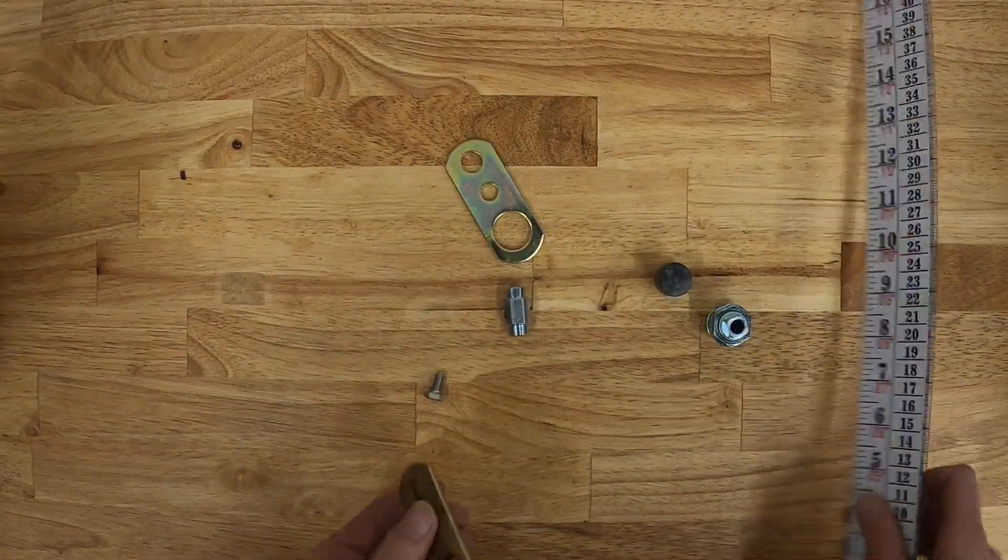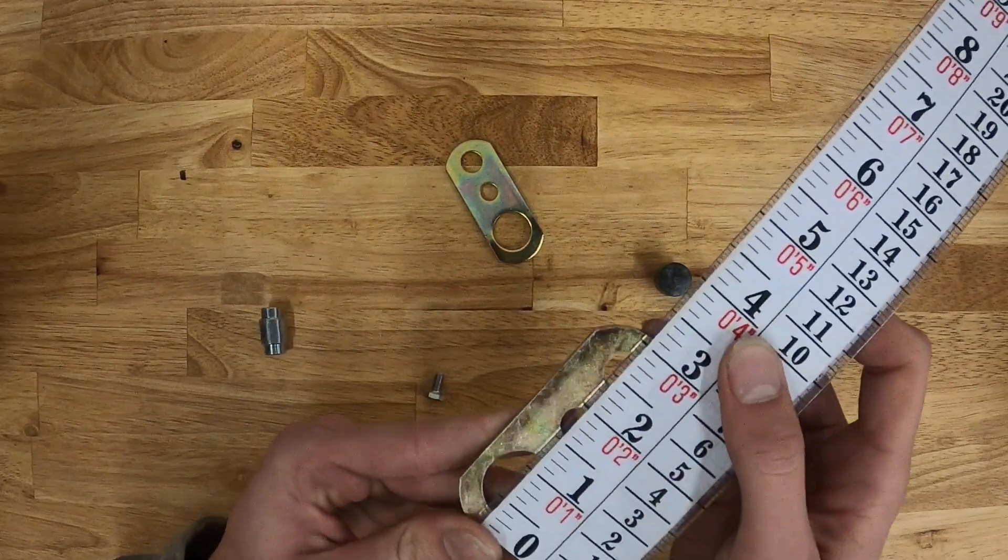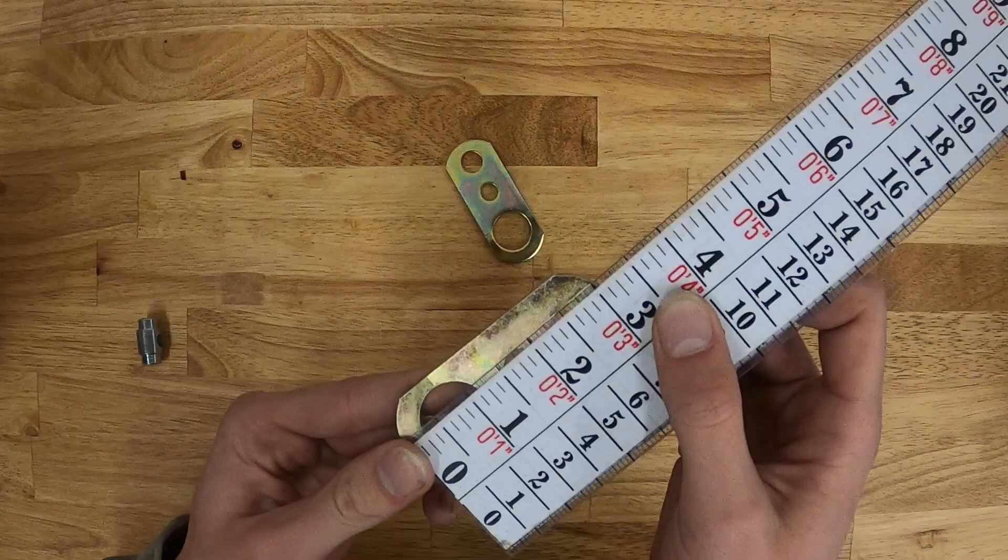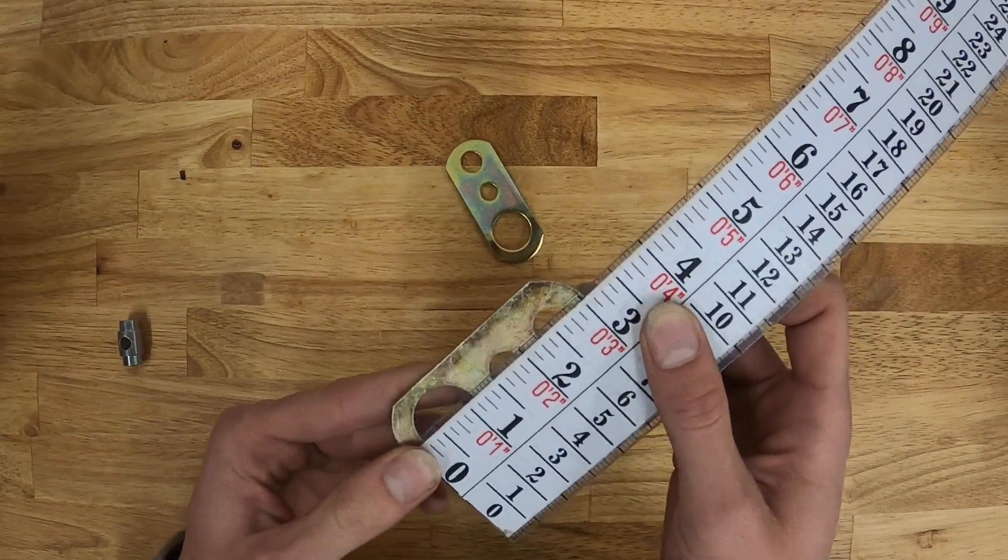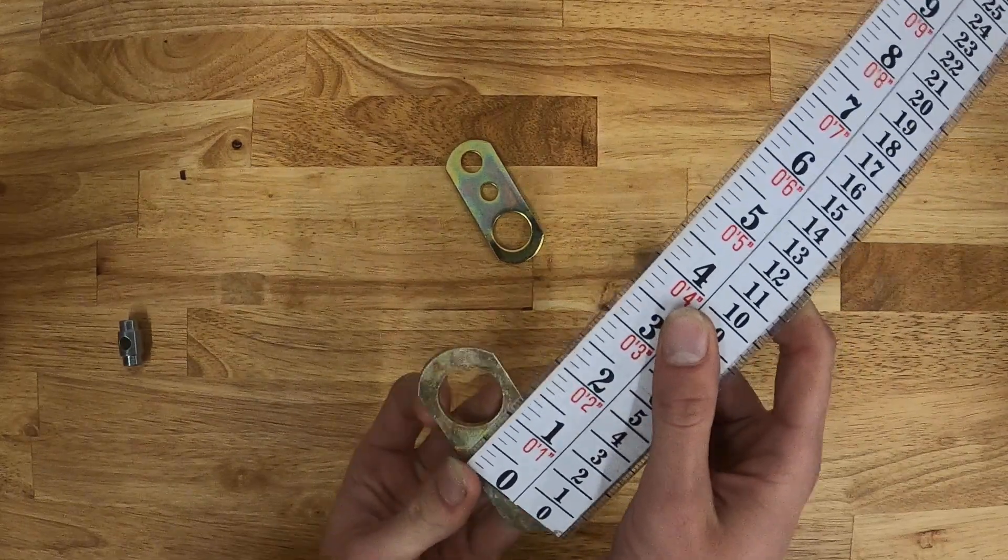And we can also measure the link plates. And total length, right about three and an eighth inches there. With a width of right about an inch and a quarter.